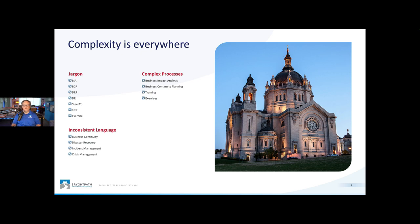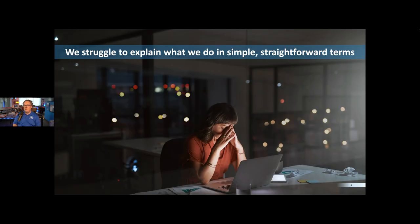We use inconsistent language when we're describing business continuity, disaster recovery, incident management, and crisis management. And we have some complex processes that we don't always do a good job of explaining: business impact analysis, or BIA; business continuity planning, or BCP; training and exercises. We make all of this too complicated, and that complexity drives a challenge for us because folks don't want to buy into the things that we're doing. We struggle to explain what we're doing in simple, straightforward terms — the elevator speech, so to speak.